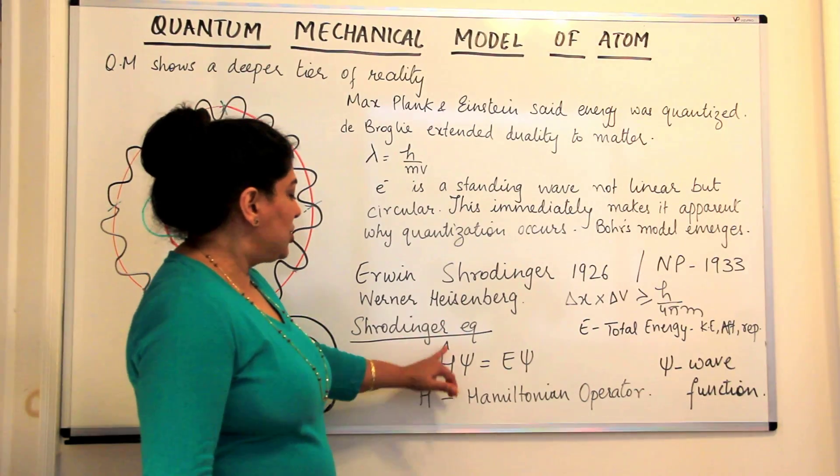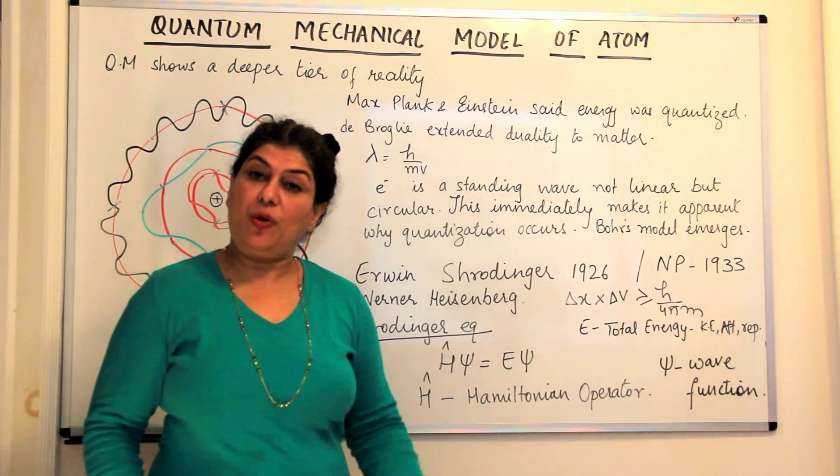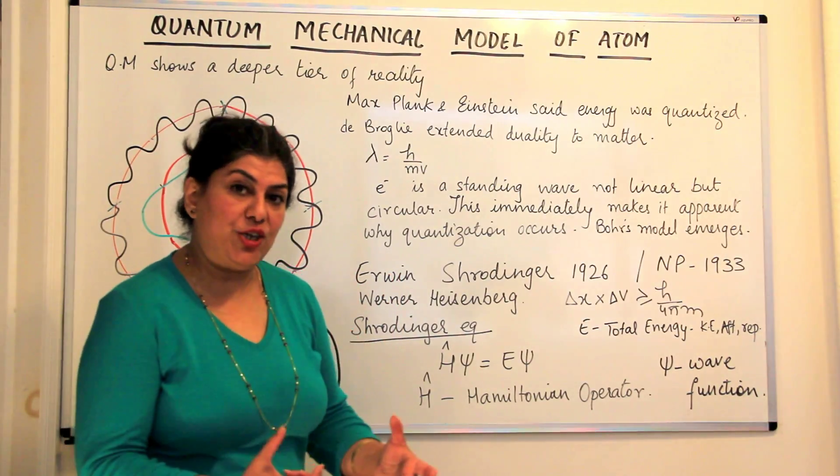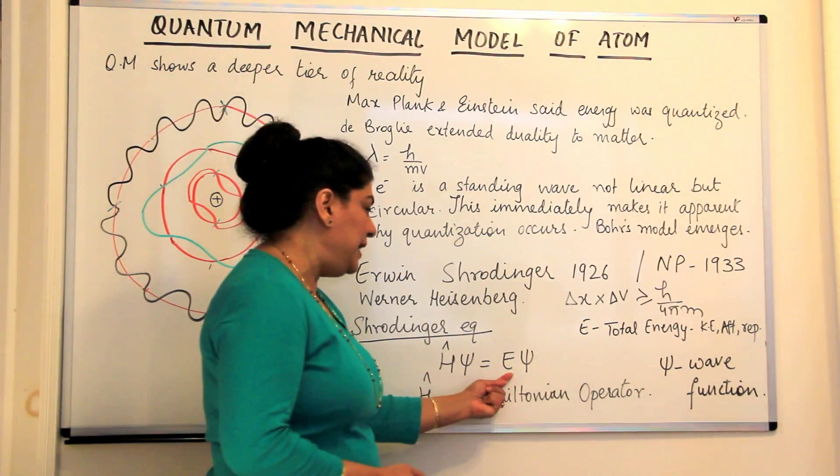The H psi was known as the Hamiltonian operator which was the mathematical operator and the solution to this equation gave us the values of E and psi.